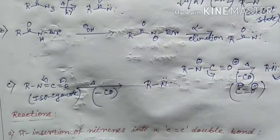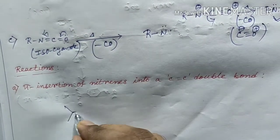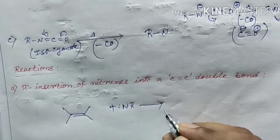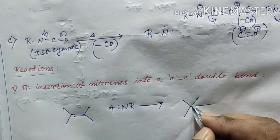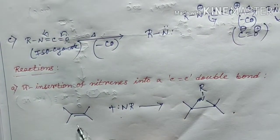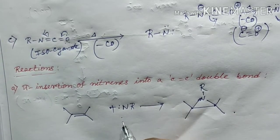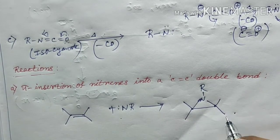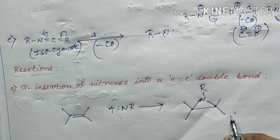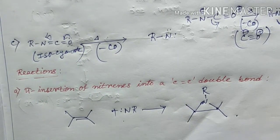Nitrenes can be inserted within a pi bond, similar to carbene, giving an aziridine compound. If we start with a cis olefin, singlet nitrene gives the cis aziridine product, while triplet nitrene gives a mixture of cis and trans aziridine products. The stereoselectivity of addition is analogous to carbene — watch the previous video on carbene chemistry for the detailed mechanism.